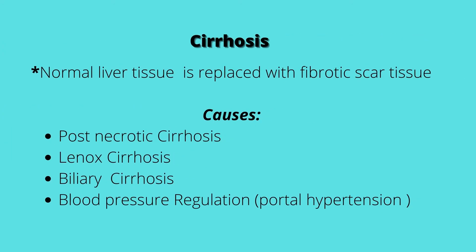Cirrhosis is where normal liver tissue is replaced with fibrotic scarred tissue. Some causes include post-necrotic cirrhosis, which can be due to a viral hepatitis infection, toxins, or medications that damage the liver. We can have Laennec's cirrhosis, which is where a patient is a chronic alcoholic, or biliary cirrhosis, which is due to chronic biliary obstruction.